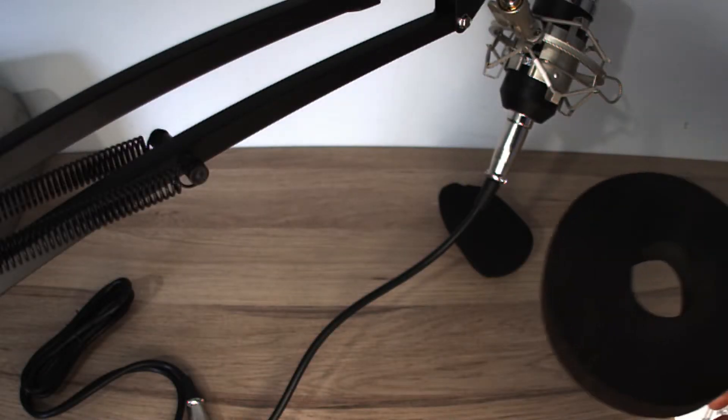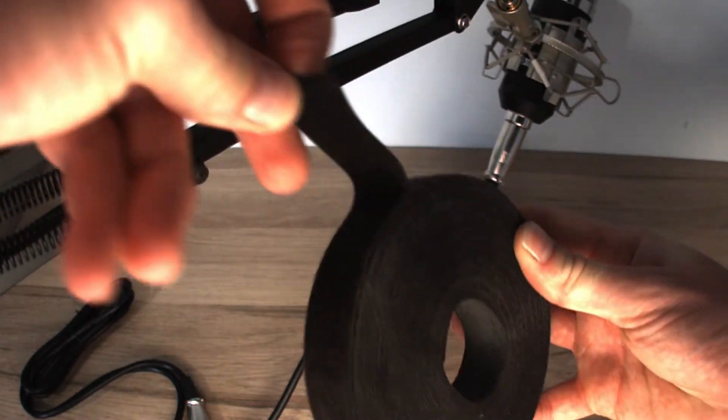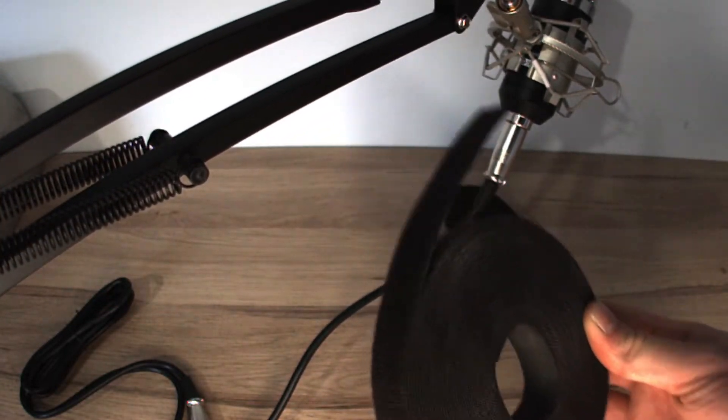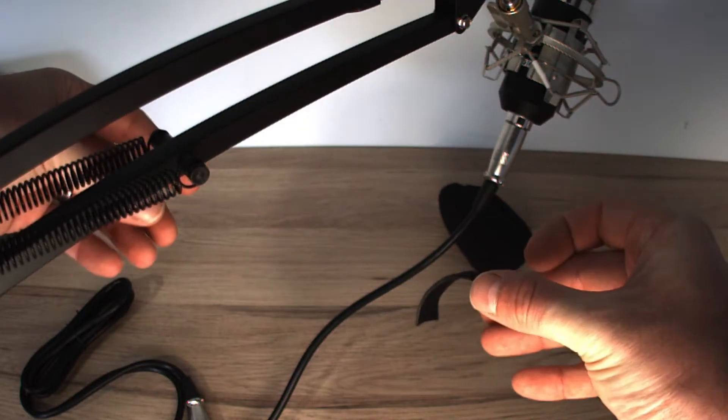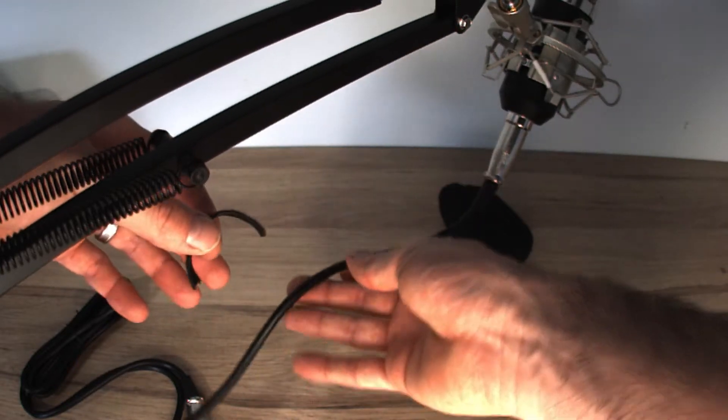As for cable tidying, nothing's provided. So I normally use a bit of Velcro. I'll link in the description for this. This is really handy for any cable tidying, much better than cable ties because you can just unzip it whenever you need.